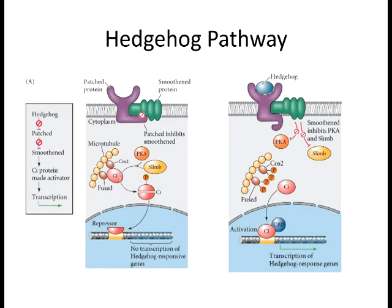Hedgehog signaling: there's sonic hedgehog, Indian hedgehog, and a third type. The main one is sonic hedgehog. In the hedgehog pathway you have a receptor called patched and another membrane protein called smoothened, which is a transmembrane protein—these are ultimately bound together. The ligand is sonic hedgehog; the receptor is patched. This is more of a repressive pathway where when there's no ligand, a series of proteins cleave the CI protein, which sits on the promoter region of key genes and prevents transcription factors from activating gene expression.